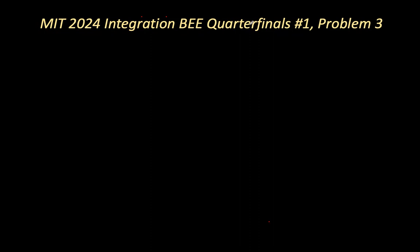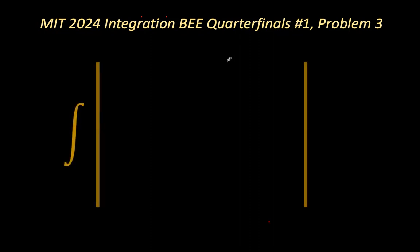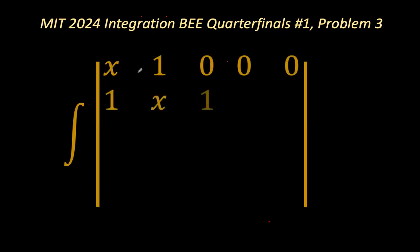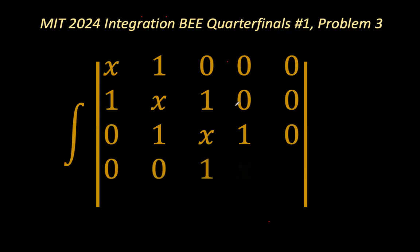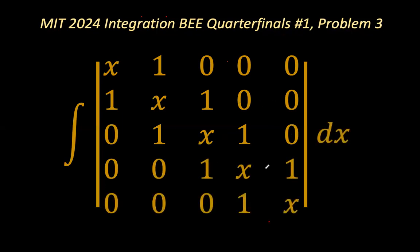Problem 3 is the focus of our attention today, which is the indefinite integral of the determinant of a matrix with X and 1 on the diagonal entries — specifically a 6x6 tridiagonal matrix with X on the main diagonal and 1s on the sub- and super-diagonals, and 0s elsewhere.